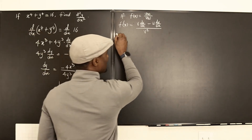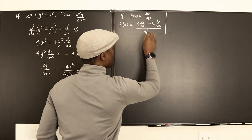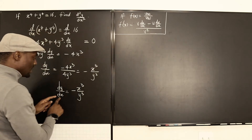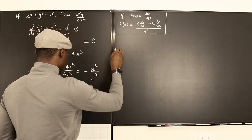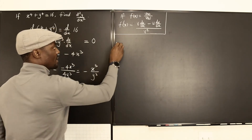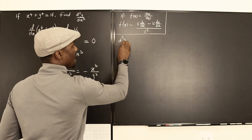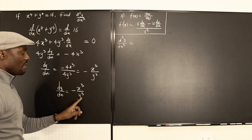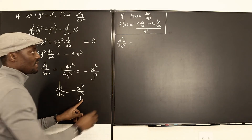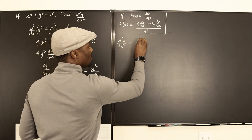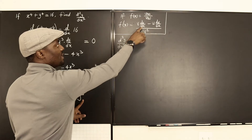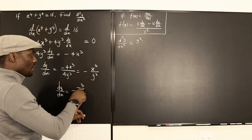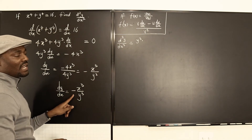So applying this, the second derivative d²y/dx² will be equal to: y cubed — that would be our v — multiplied by the derivative of the top, which would be 3x squared.